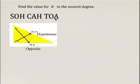We look to SOH CAH TOA to determine which trig ratio we're going to use. Since sine is opposite over hypotenuse, we're going to use sine.